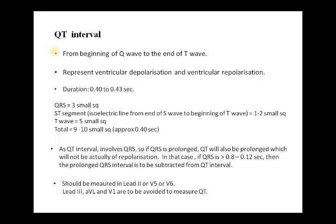The QT interval should be measured in lead 2. You may also measure it in V5 or V6, but lead 2 is preferred. Leads AVL, lead 3, and V1 are to be avoided for measuring the QT interval. Lead 2 is preferred because it lies in the exact direction of the heart's electrical impulse.